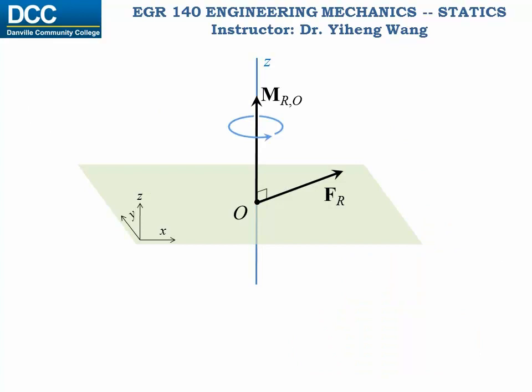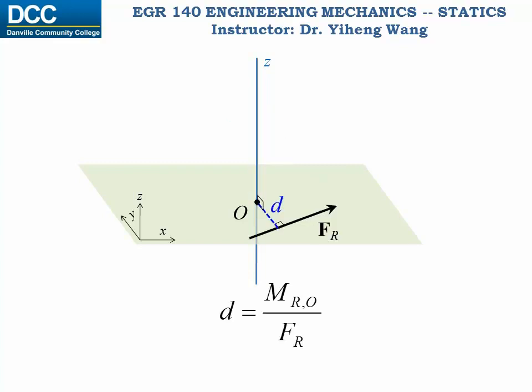In some special situations, the resultant force vector and the resultant moment vector are perpendicular to each other. You can further reduce the system by placing the force away from point O at a distance d, where d equals the magnitude of the resultant moment MRO divided by the resultant force FR. This way, force FR creates a moment about point O equal to FR times d, which equals MRO. Therefore the system is reduced to a single force system.